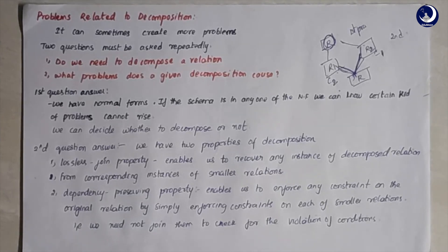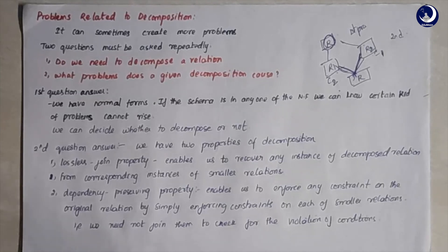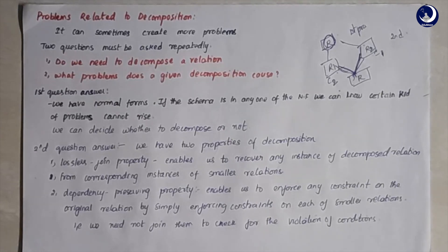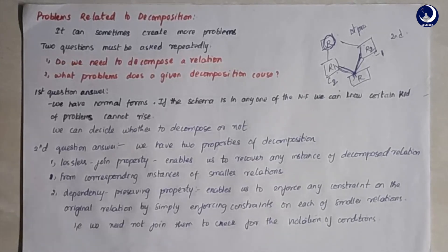That covers schema refinement — redundancy, decomposition, and the problems that decomposition can introduce. In the next lecture we will discuss functional dependencies, which is the second topic in chapter four. Stay tuned, thank you.